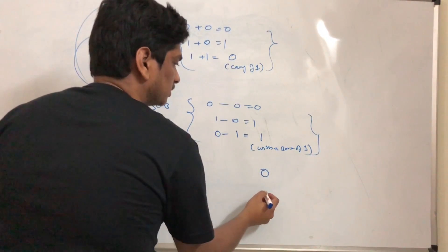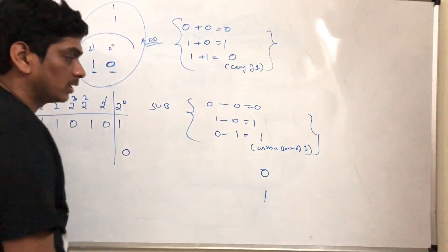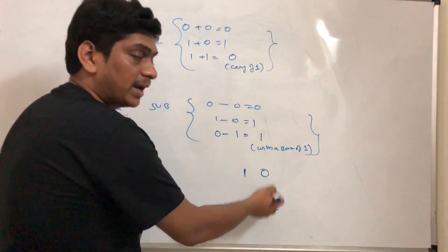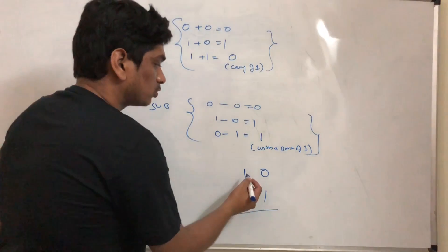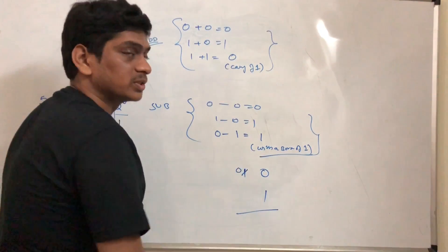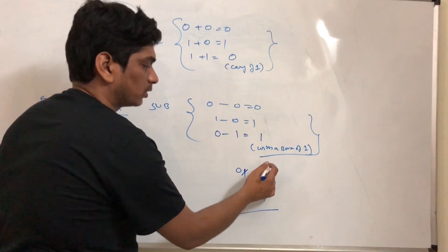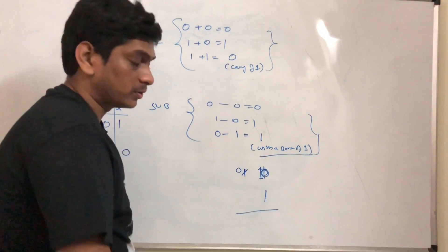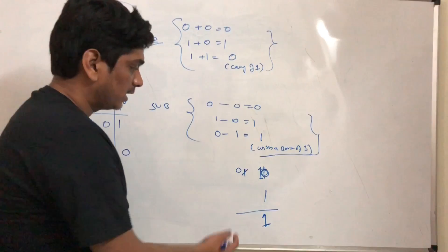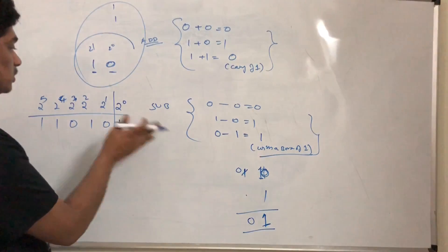For example, 1 0 minus 1: I cannot subtract 1 from 0, so I need to borrow. I borrow the 1 from the next place — it becomes 0 there, and here it becomes 1 0. So now the answer in this place is 1.